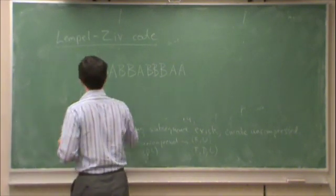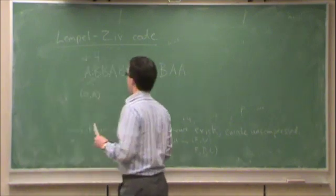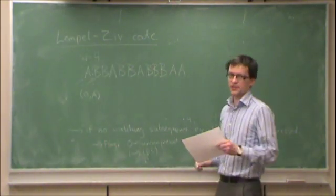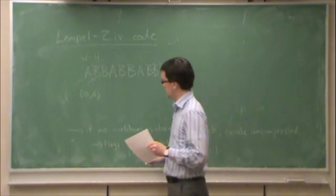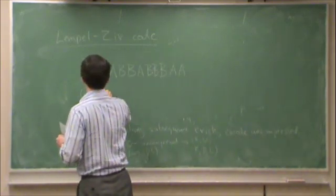Now we're looking here. The only thing we have in history is A. Which is not B. So therefore we have to send 0, B.